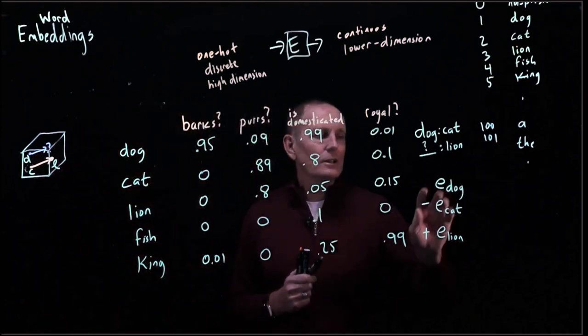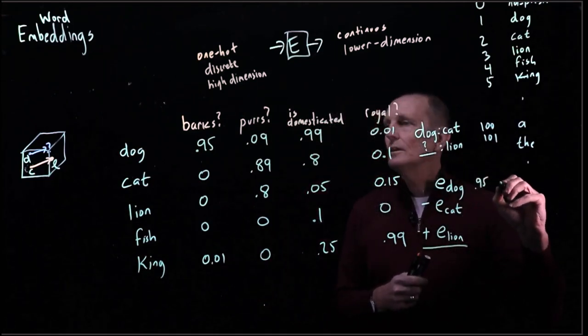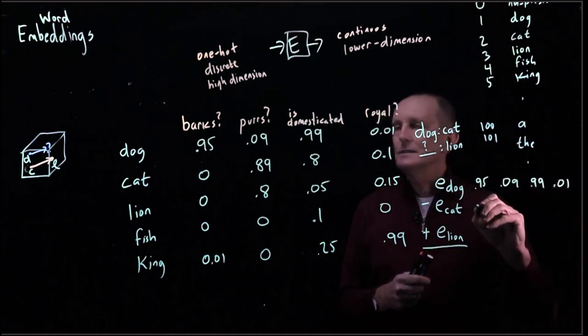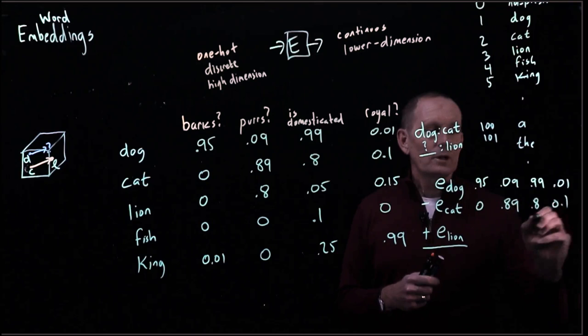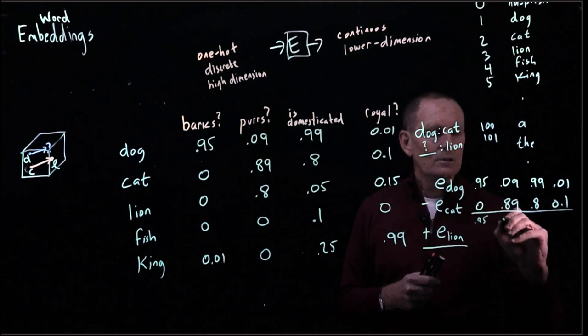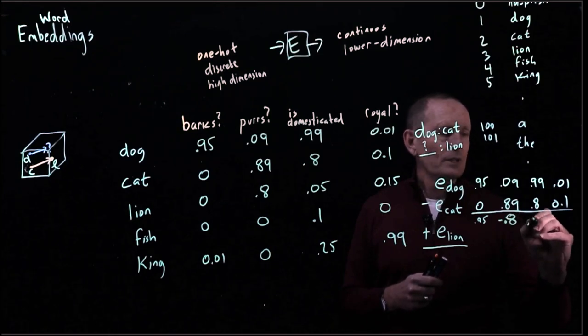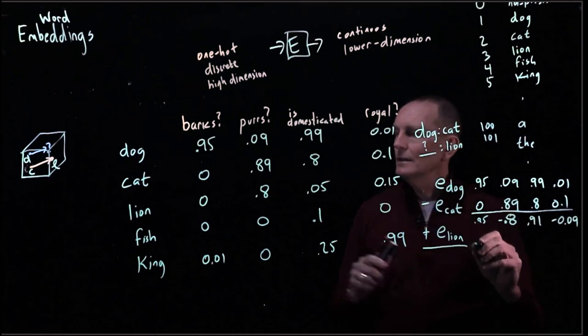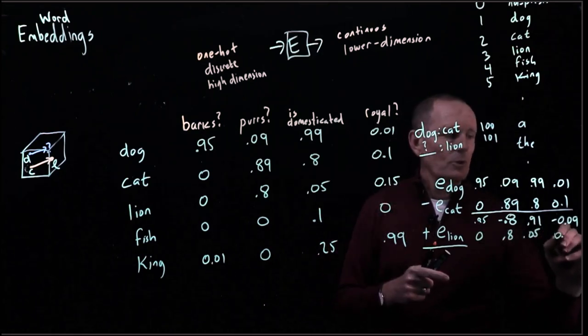And what do we get? Let's just look. So E dog is 0.95, 0.09, 0.99, 0.01. Cat is zero, 0.89, 0.80, 0.1. So if we subtract these, we get 0.95, negative 0.8, 0.91, and negative 0.09. And then we add on lion. Lion is zero, 0.8, 0.05, and 0.15.